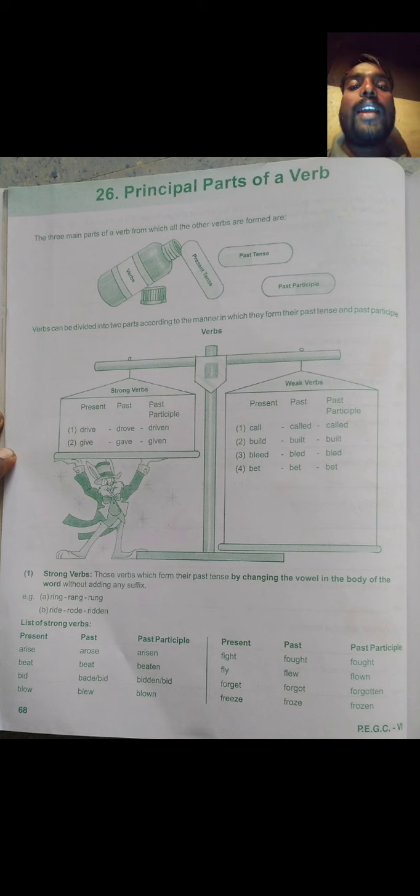Let us know the definition of strong verbs. Those verbs which form their past tense by changing the vowel in the body of the verb, a word, without adding any suffix. Strong verbs are formed without adding any suffix or prefix. For example, ring, rang, rung.